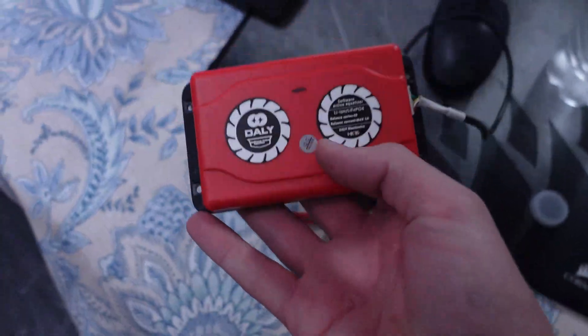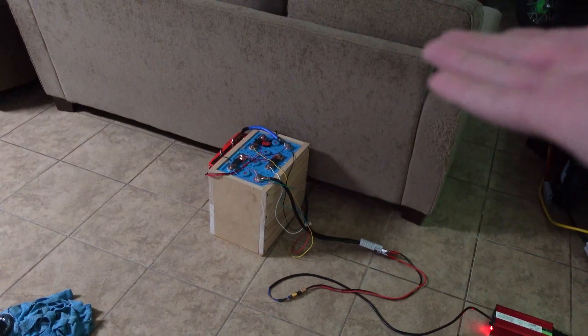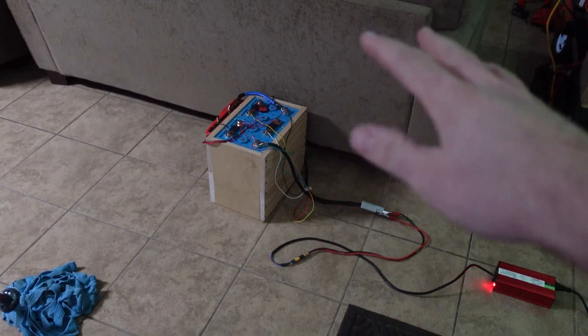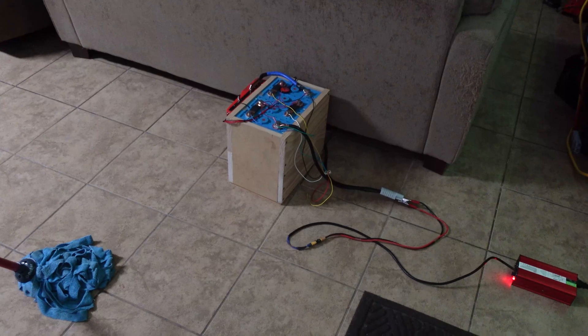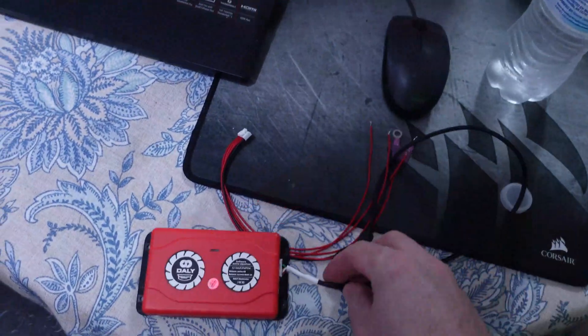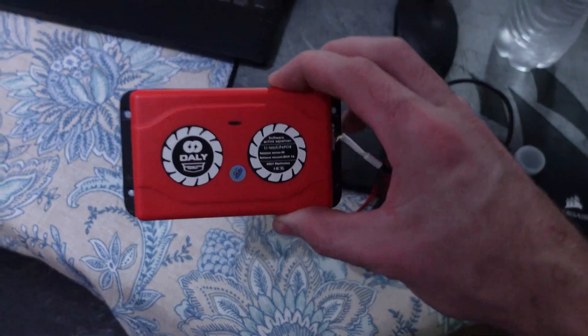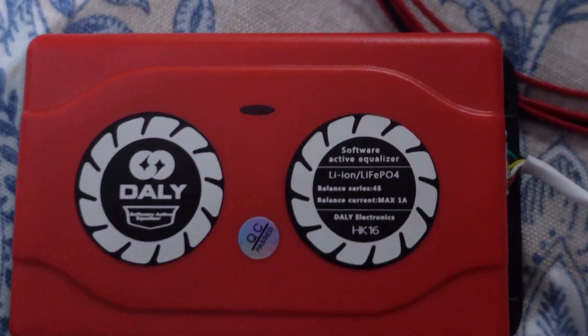I also have this Daly active balancer that I want to try out. It has a high voltage cutoff. When one of the cells gets to 3.65 or 3.75 the BMS is gonna shut off but the rest of the cells are not gonna be at their full charge yet. When the cells begin to get unbalanced I want to throw this on there. This is also Bluetooth and then we're gonna look at the phone and check to see what the cells are doing.